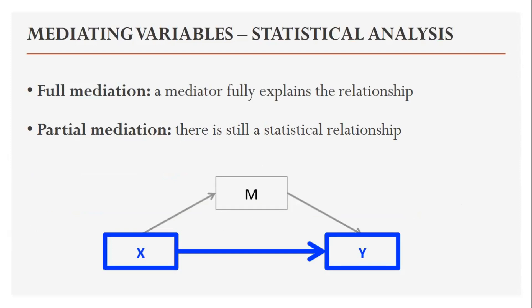Mediation analysis is a way of statistically testing whether a variable is a mediator or not. We can use ANOVA tests and linear regression analysis to assess that. In full mediation, a mediator fully explains the relationship between the independent and dependent variable — without the mediator in the model there is no relationship. In partial mediation, there is still a statistical relationship between the independent and dependent variable even when the mediator is removed from the model.